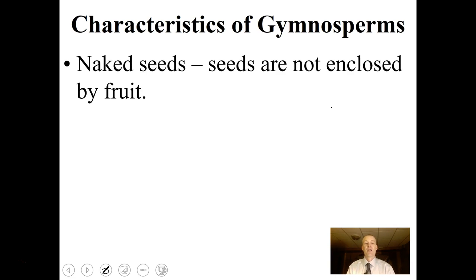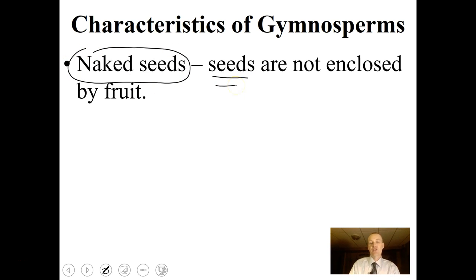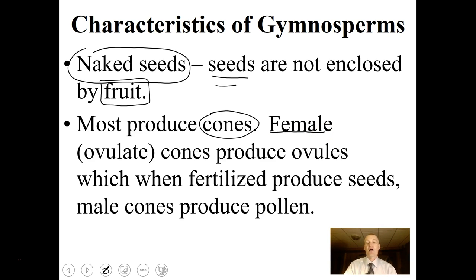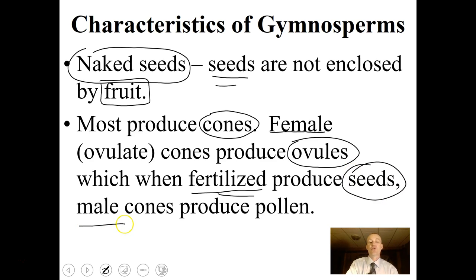Gymnosperm literally means naked seeds — they do have seeds, but they're not enclosed by fruit. Flowering plants will have fruit around their seeds, but gymnosperms don't have this characteristic. Most are going to produce cones. The female cones are called ovulate cones and they produce ovules, which are fertilized by pollen and produce seeds. The male cone produces pollen in huge amounts, as you see during certain times of year when your car turns yellow.